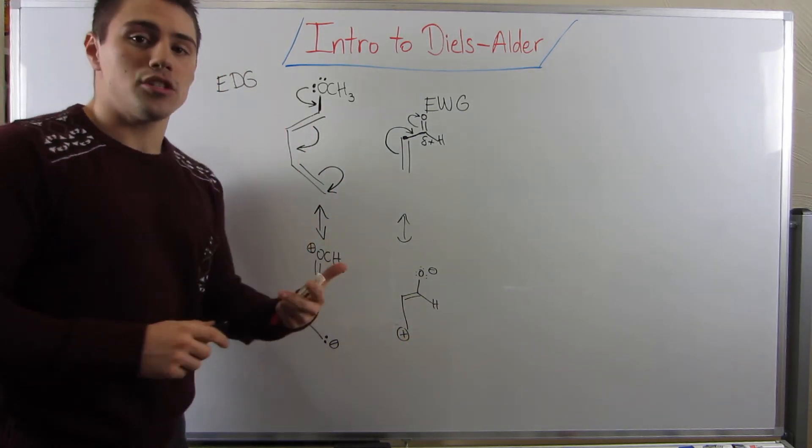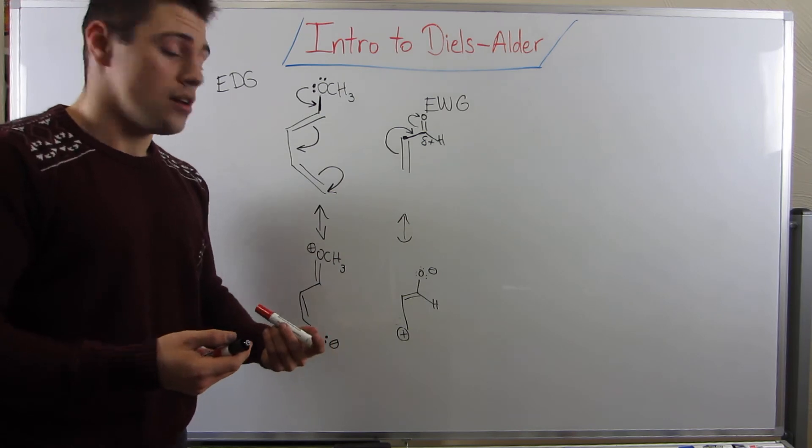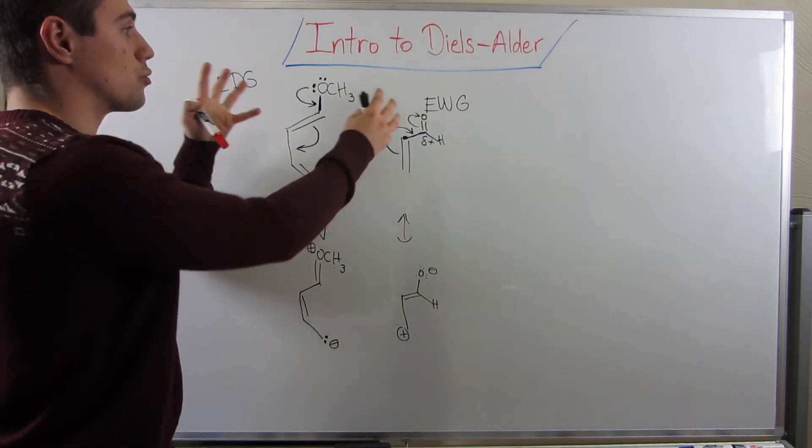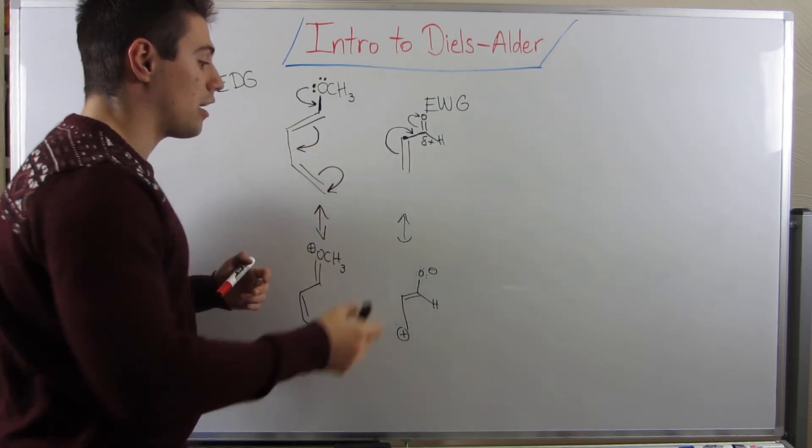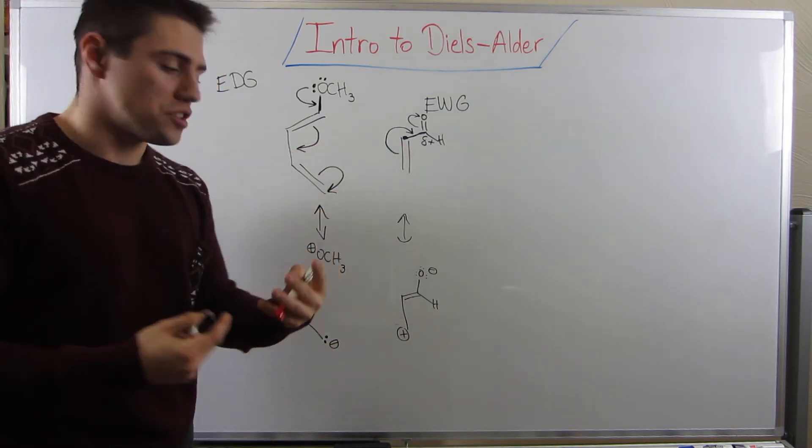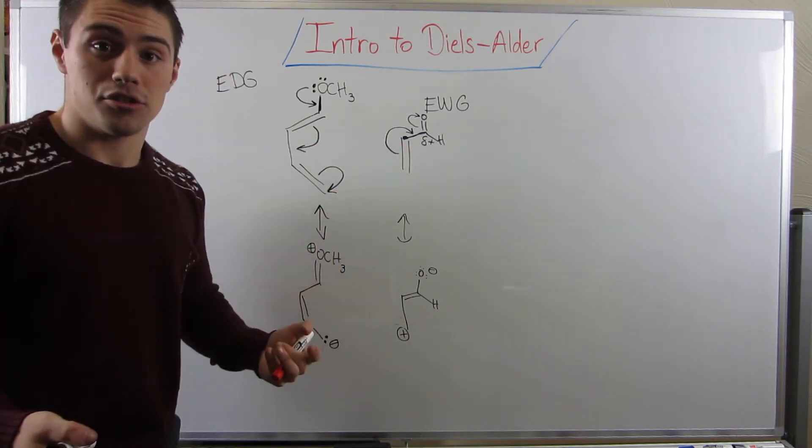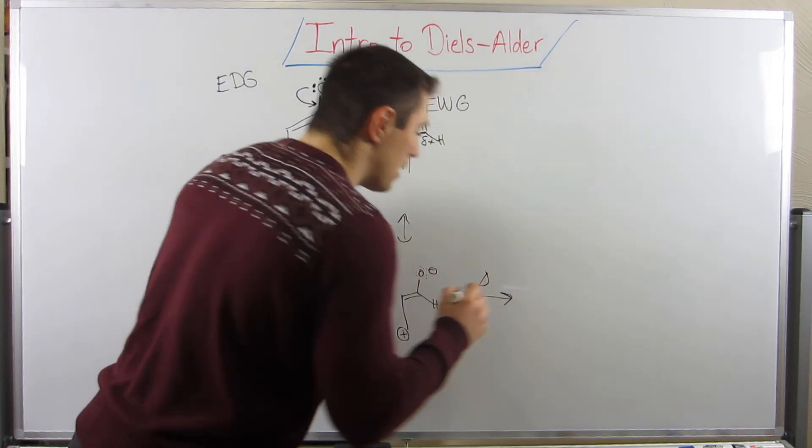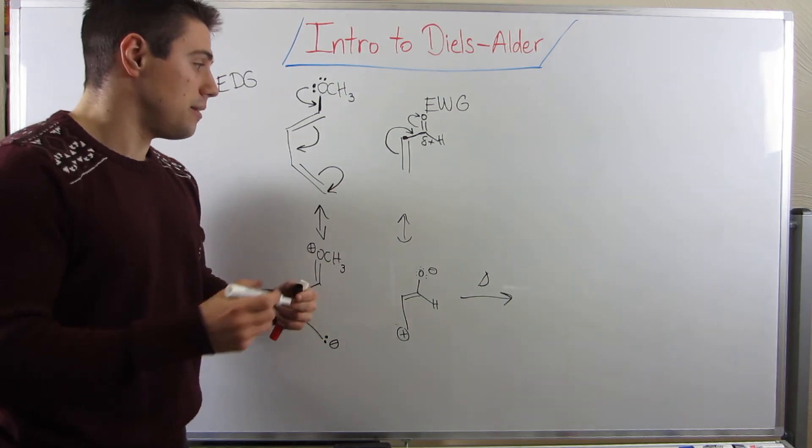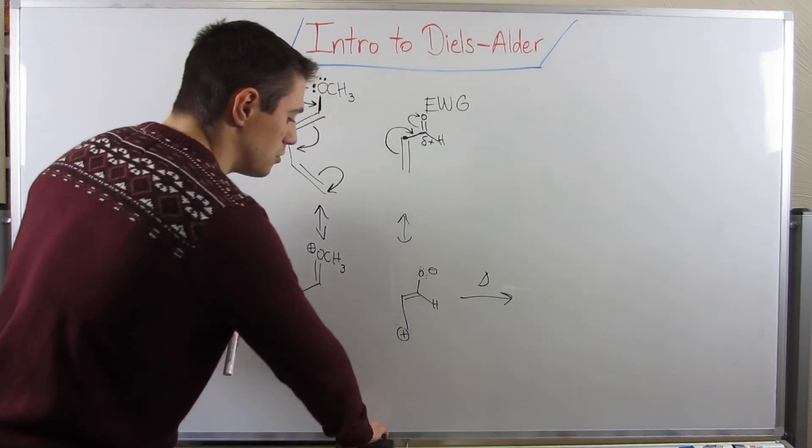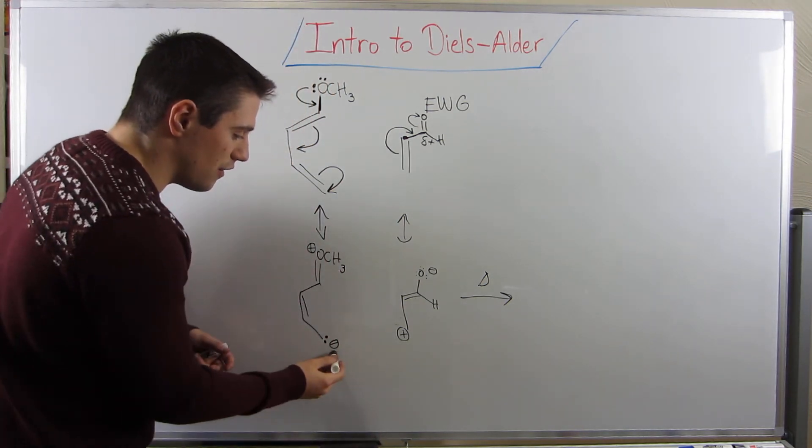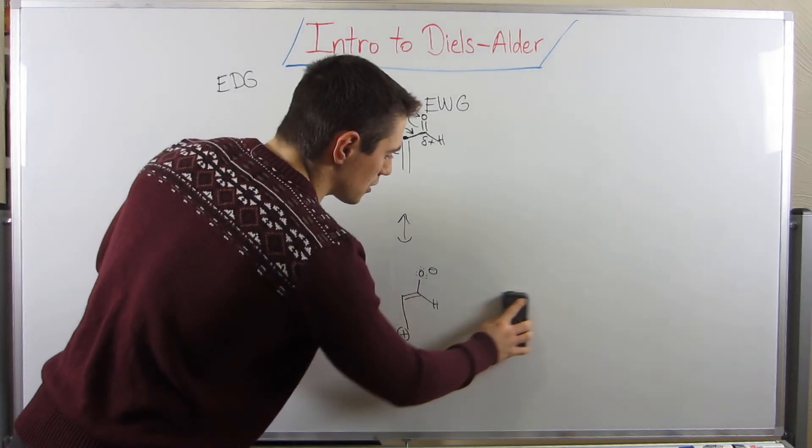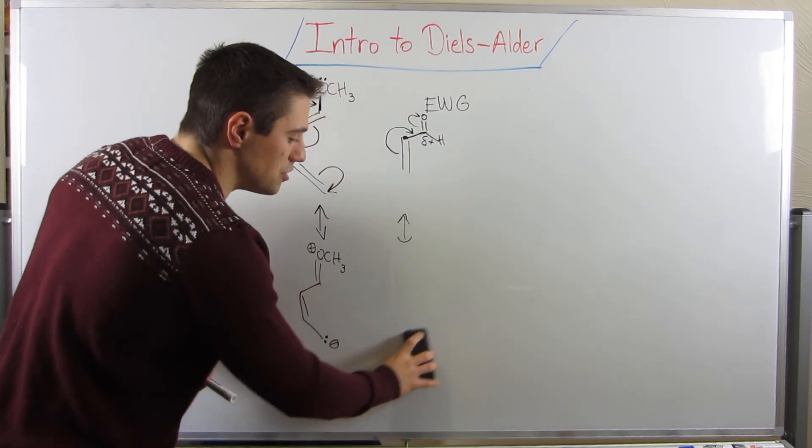So you can see from the initial Diels-Alder reaction that we did, we were matching up our charges, right? So whenever we stick groups on our diene and dienophile, we kind of induce these charges at certain positions, right? And it helps make the reaction go faster, and we make more interesting products, right? So we can see that our negative and positive charge are lined up. If I was to predict this product for you guys, I could just go ahead and do it, right?